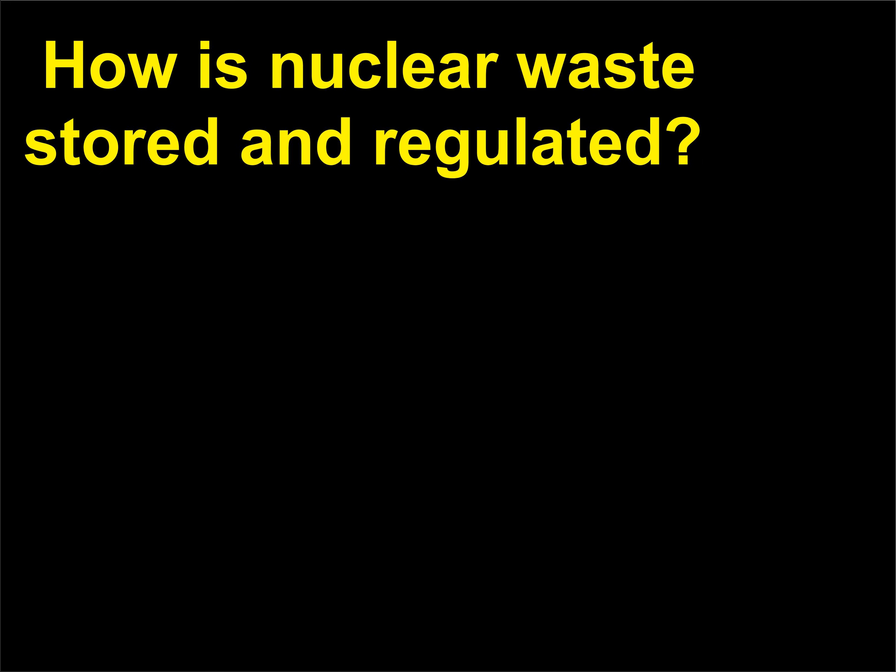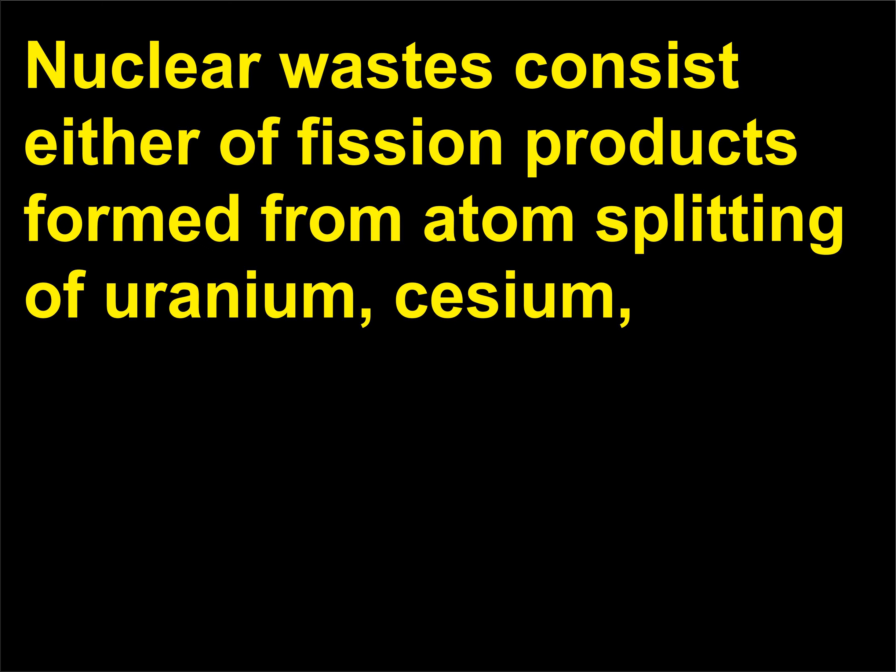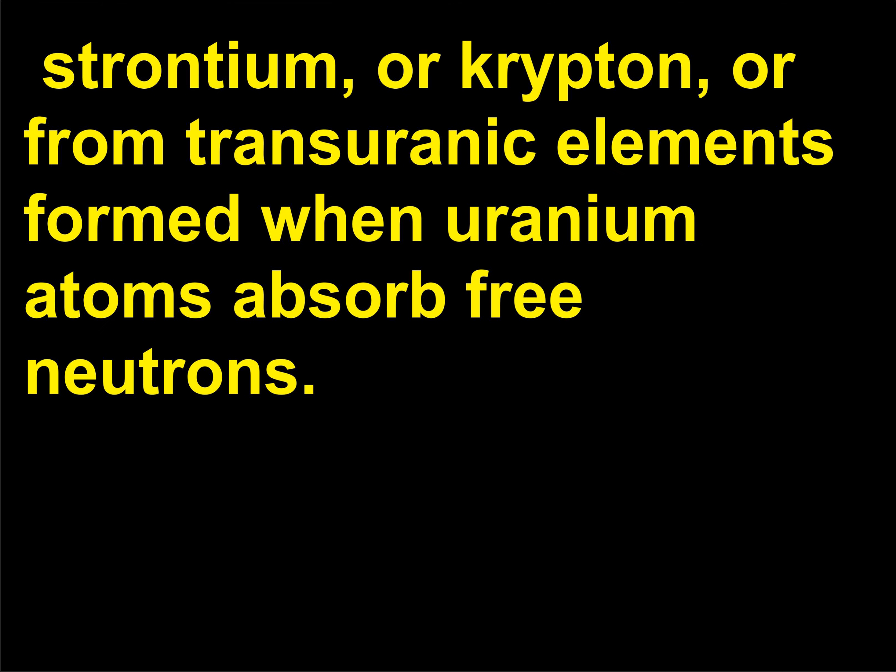How is nuclear waste stored and regulated? Nuclear wastes consist either of fission products formed from atom splitting of uranium — caesium, strontium, or krypton — or from transuranic elements formed when uranium atoms absorb free neutrons.